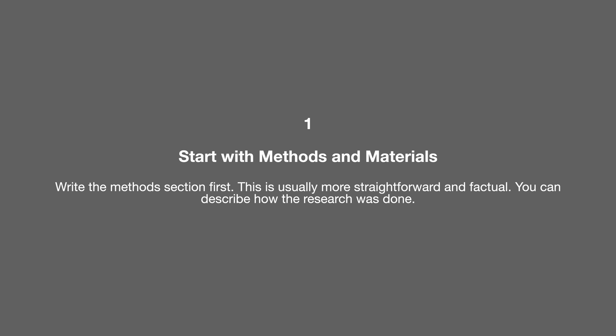Now that we've done the preliminary stuff, let's move on to the writing sequence. We're not writing from start to end — we're writing in a slightly different sequence that helps you write quickly. Number one: start with the methods and materials. Write the methods section first. It's straightforward and factual — just describe how the research was conducted. There's no real analysis or critique, just list what you've done and used. This can take a couple of hours or even less.